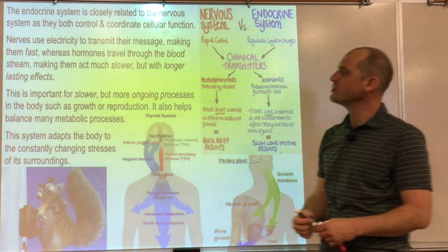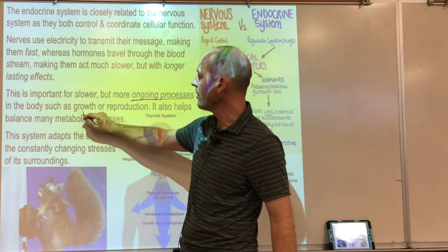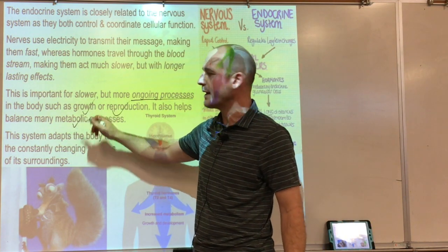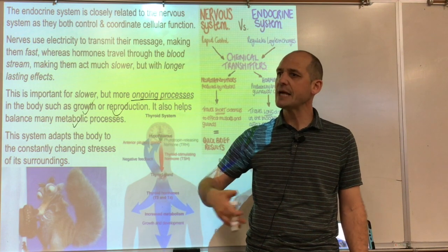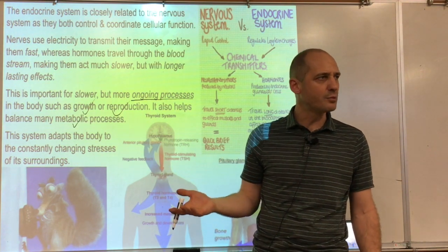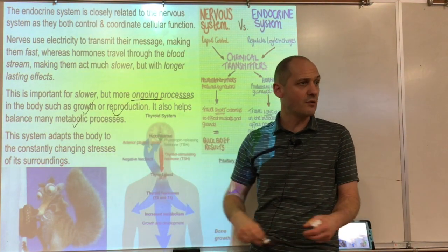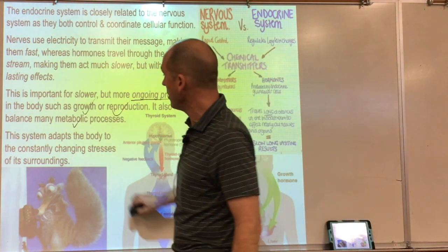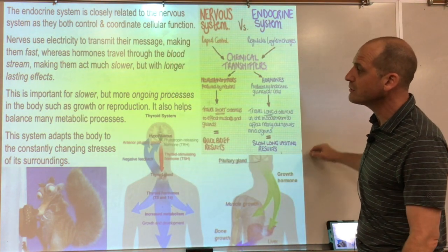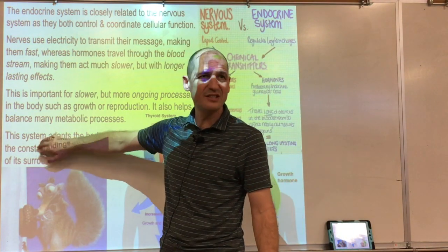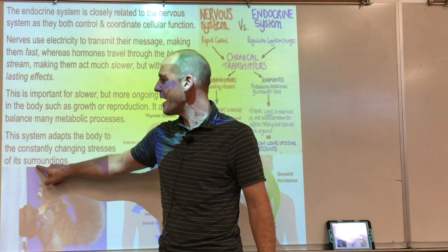Hormones act slower and longer, making them suitable for ongoing processes like growth, reproduction, and metabolic processes — such as bringing sugar into cells and controlling metabolic rate. The thyroid gland helps with metabolism, and if it's not functioning properly, one side effect can be difficulty losing weight. Both the nervous system and endocrine system work to adapt the body to a constantly changing environment and its stresses.